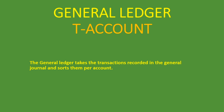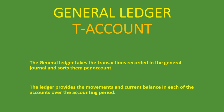For instance, when we do transactions for vehicle, when we come to the general ledger, we'll record it in the vehicle's account alone. So we'll be able to see all the transactions pertaining to a particular account — that is why we do the general ledger. The ledger provides the movements and current balance in each account over the accounting period, so you can see the current balance, which is what closing off the account means.